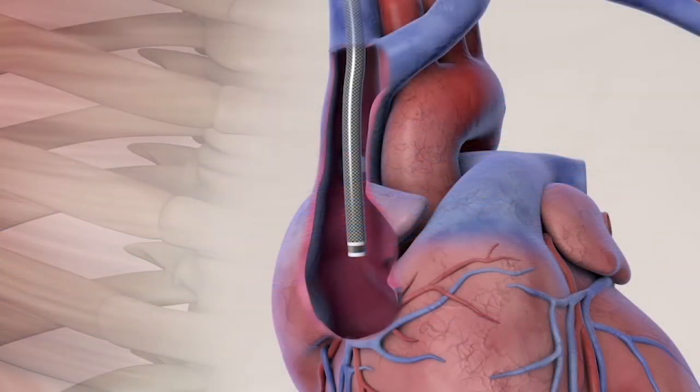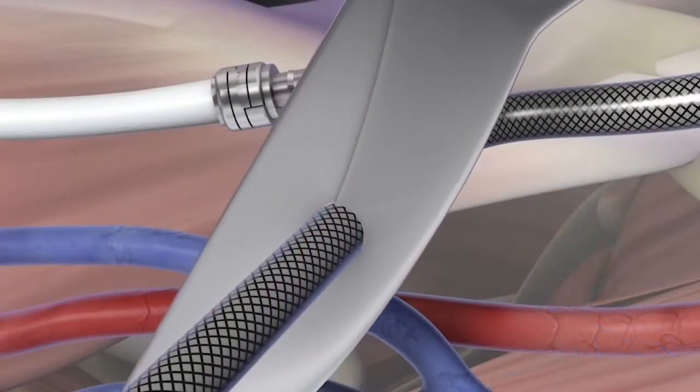Using fluoroscopy to confirm placement in the mid to upper right atrium, cut the venous outflow component to length.